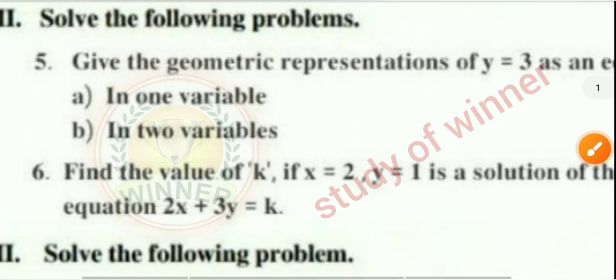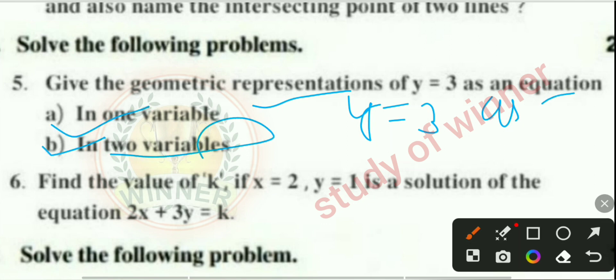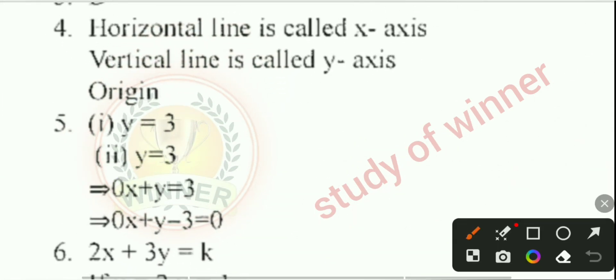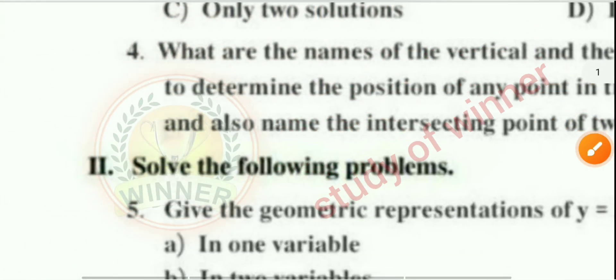Question 5: Give the geometric representation of y = 3 as an equation in one variable and in two variables. In one variable, y = 3 is represented as a point on the number line.